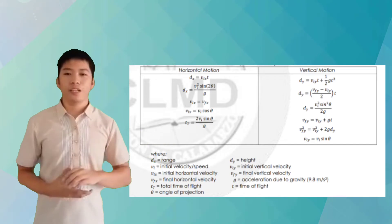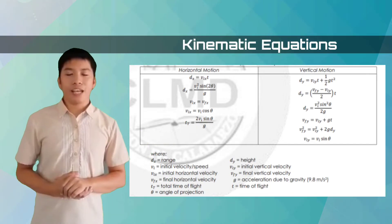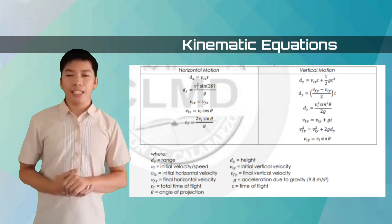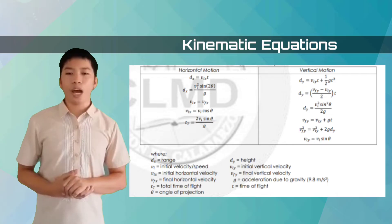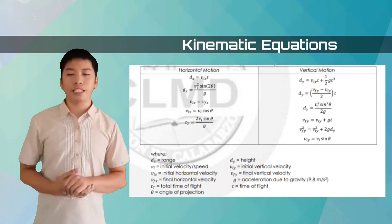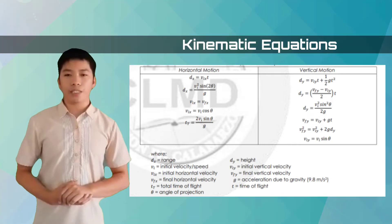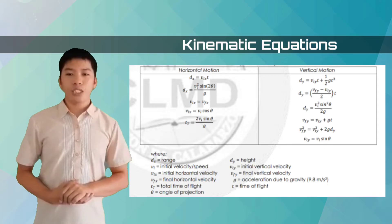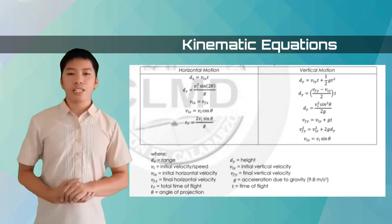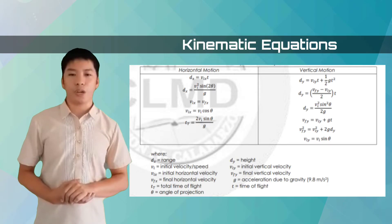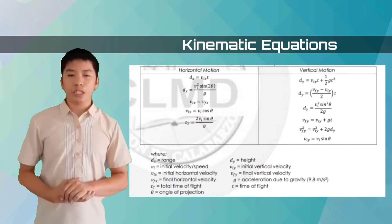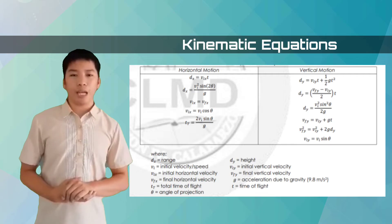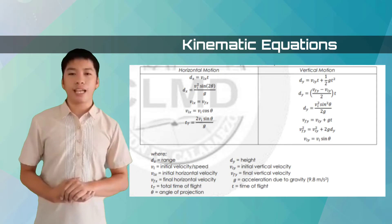Let us take a look at the kinematic equations for projectile motion. Where dx is the range and dy is the height. While vi is the initial velocity or initial speed, and viy is the initial vertical velocity. Vix is for the initial horizontal velocity, and vfy is for the final vertical velocity. We also have vfx or the final horizontal velocity, and g is for the gravitational acceleration, which has a constant value of 9.8 meters per second squared. We also have t for the total time of flight, and theta as the angle of projection.